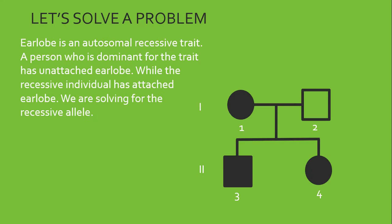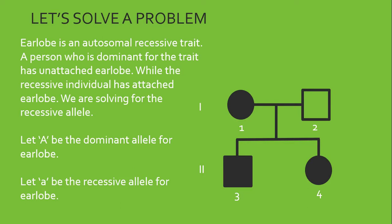Let's solve a problem. Earlobe is an autosomal recessive trait. A person who is dominant for the trait has unattached earlobe, while the recessive individual has attached earlobe. We are solving for the recessive allele. Defining the allele, let capital A be the dominant allele for earlobe. Let lowercase a be the recessive allele for earlobe. Observe, I'm moving the cursor just to highlight the point. So, I want you to write the genotype and phenotype for the following family tree.